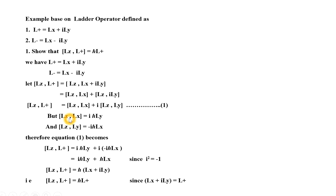As we know, the standard relation LZ comma LX is equal to iH-cross LY. Another standard relation is that LZ comma LY is equal to minus iH-cross LX. The minus sign comes because Z and Y are reversed. Therefore, equation 1 becomes by substituting both these values.